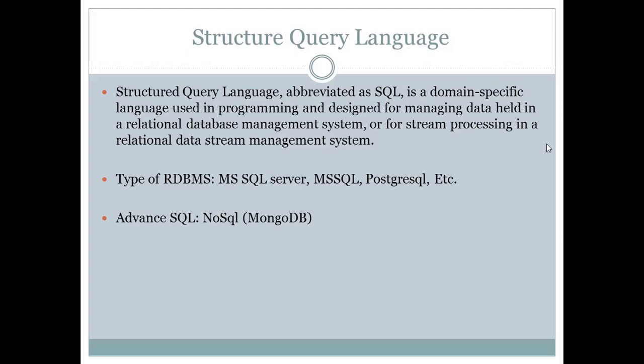The next level is advanced SQL — that is NoSQL. NoSQL is mostly used in big tech organizations where they store trillions of data and data doesn't have proper data types — it can be stored in any form: pictures, videos, text, anything. In NoSQL, data is not stored in a structured manner; it's used to store a large number of varied data types. The best tool to learn is MongoDB, though it's a bit difficult — you can learn it with practice.